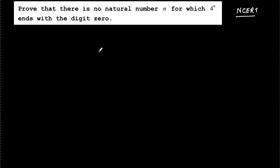The question says prove that there is no natural number n for which 4 to the power n ends with the digit zero. That means you can't find any natural number n which when raised to the power on 4 ends with digit zero.